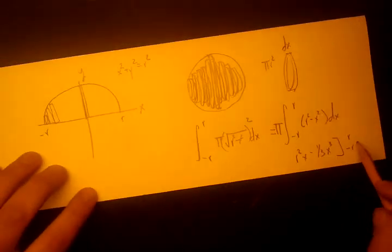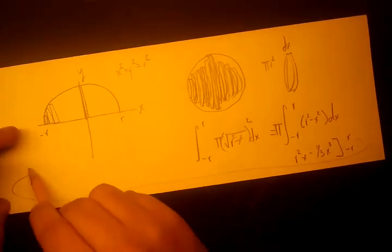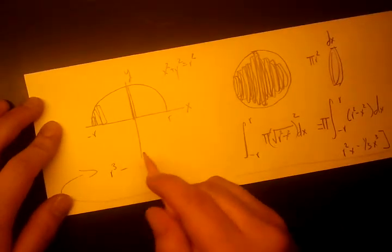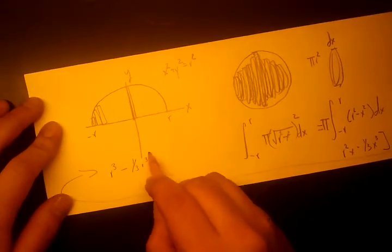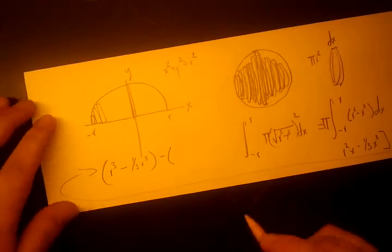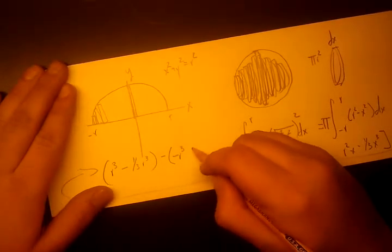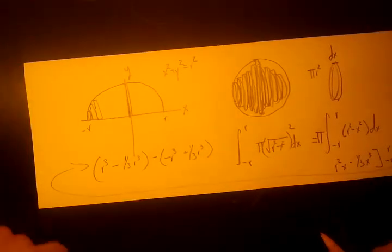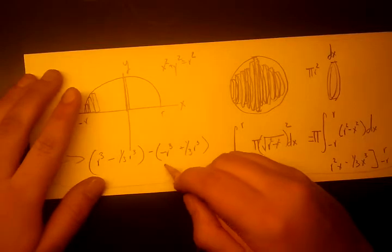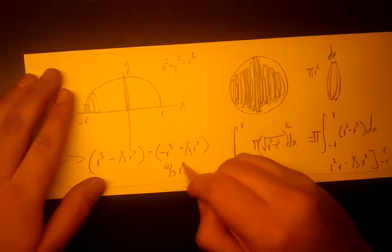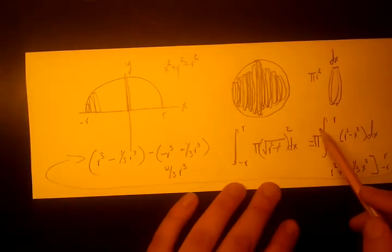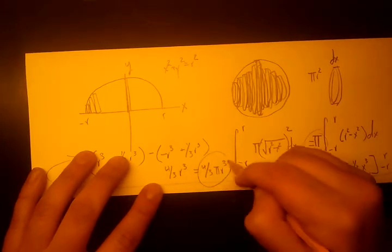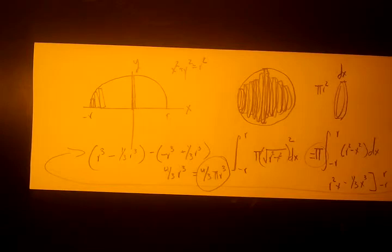And when we do this, let's do this over here. And when we put an r into this collision, we get r cubed minus 1 third r cubed minus, we're going to get negative r cubed plus 1 third r cubed. And when we work this all out, when we solve all this out, we're going to get 4 thirds r cubed. And don't forget the pi that we took out in the beginning, put it back in. And we get 4 thirds pi r cubed, which we know as the volume of our sphere.